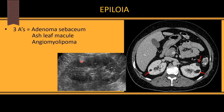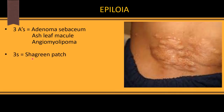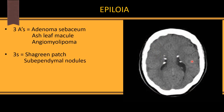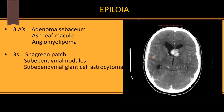The three S's are: shagreen patch — in the sacral region, an orange peel-shaped skin lesion; sub-ependymal nodules — a hallmark of tuberous sclerosis, these are calcified nodules along the ependymal lining of the ventricles.